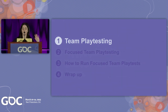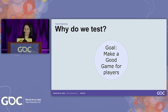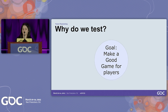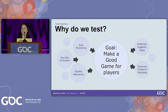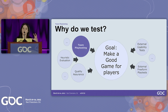Let's start by looking at team playtesting and why it's worth leveraging. First, let's talk about why we test. The reason we test as devs is that our goal is to make a good game for players, and we have tons of tools to help us assess this: team playtesting, heuristic evaluation and expert reviews, quality assurance departments, and external research such as external usability tests and freeform tests with players. Today we're just looking at one of those tools.